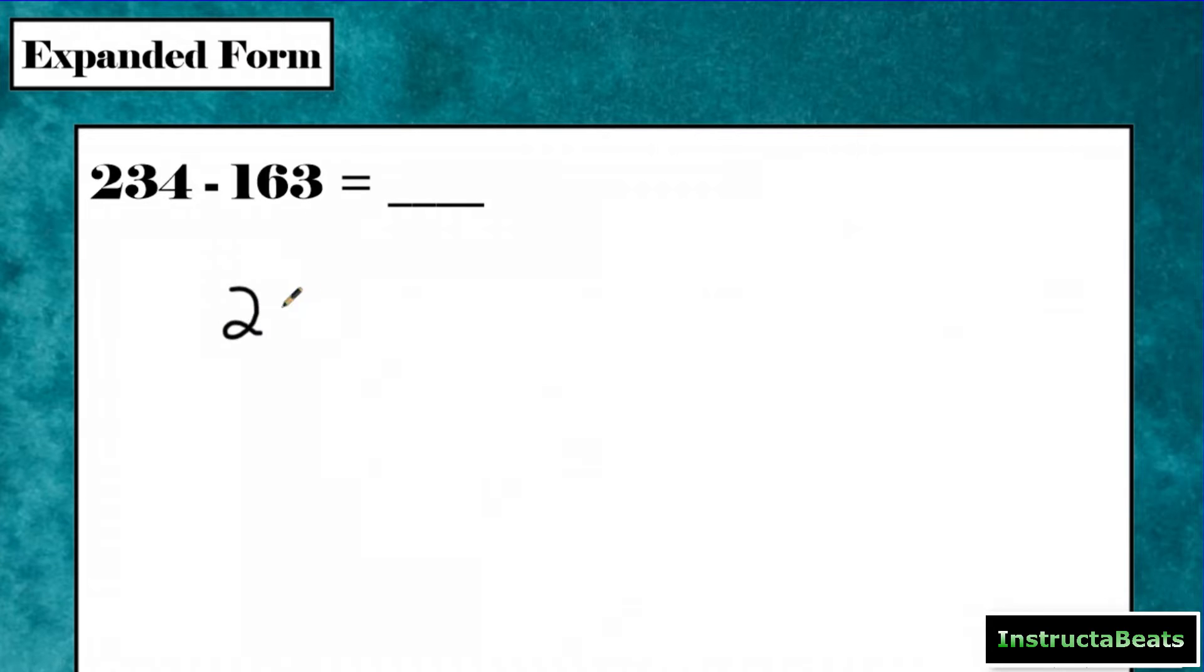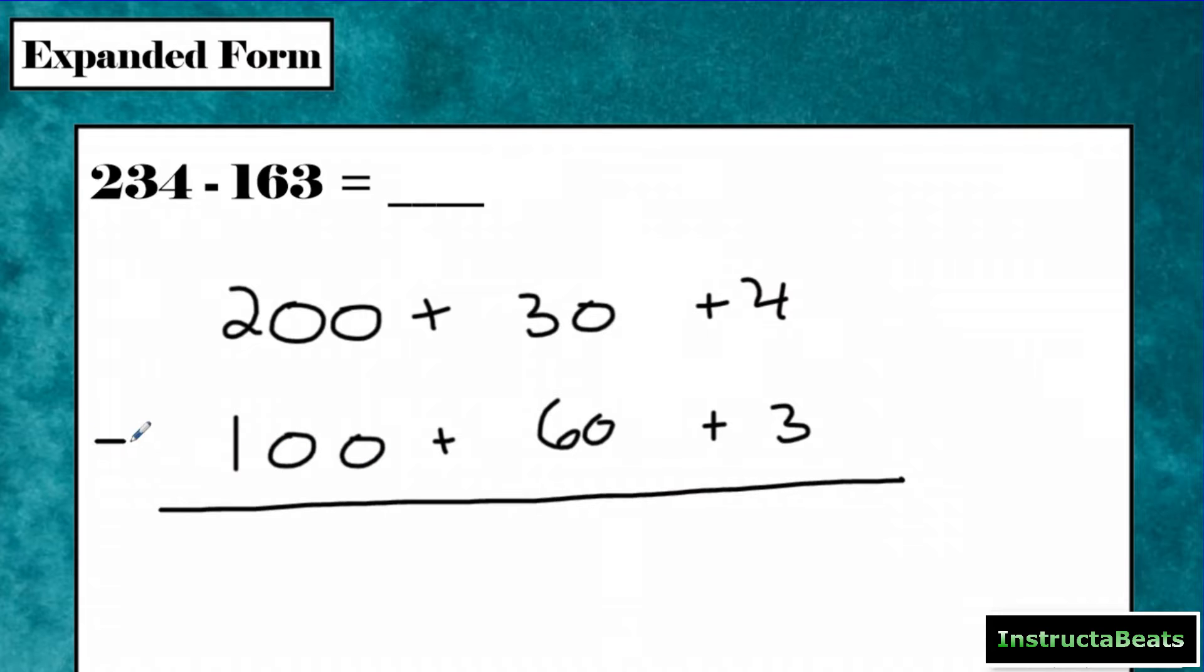So if I do this with the expanded form, I'm doing 200 plus 30 plus 4. I want to first step, line up my place values and write them in expanded form. So I have my ones place lined up now, I have my tens and my hundreds and I am subtracting. I'm going to go from right to left, starting with my ones place.